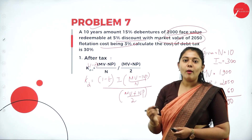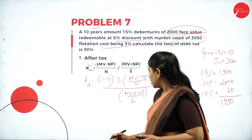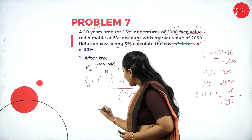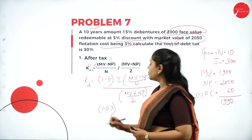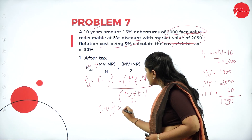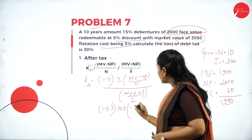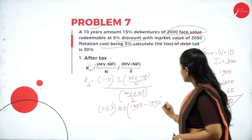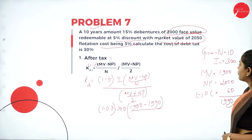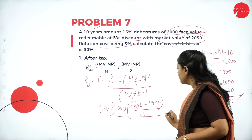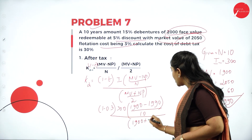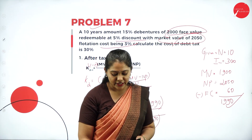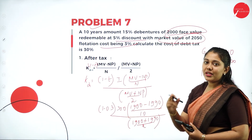Substituting all values into the after-tax formula: interest = 300, maturity value = 1900, net proceeds = 1990, number of years = 10, tax rate = 30% (0.3). First, 1 − 0.3 = 0.7. Numerator bracket: 1900 − 1990 = −90; divided by 10 = −9. Denominator bracket: (1900 + 1990) / 2 = 3890 / 2 = 1945.